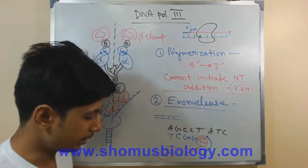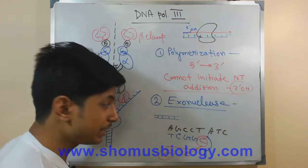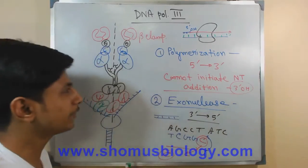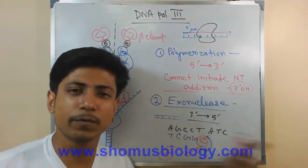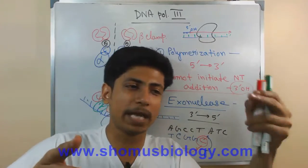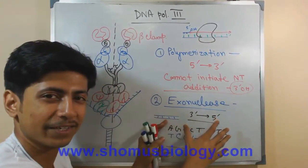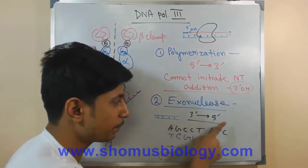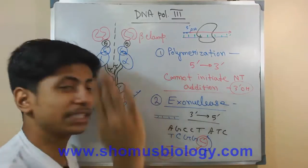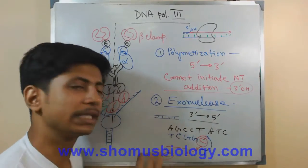The exonuclease activity direction for DNA Polymerase 3 is 3 prime to 5 prime — opposite to polymerization. This is logical: since polymerization goes 5 to 3, the exonuclease goes back 3 to 5 to remove an incorrectly added nucleotide. DNA Polymerase 1 also has 3 prime to 5 prime exonuclease activity, but additionally has 5 prime to 3 prime exonuclease activity — whereas DNA Polymerase 3 only has the 3 prime to 5 prime exonuclease.